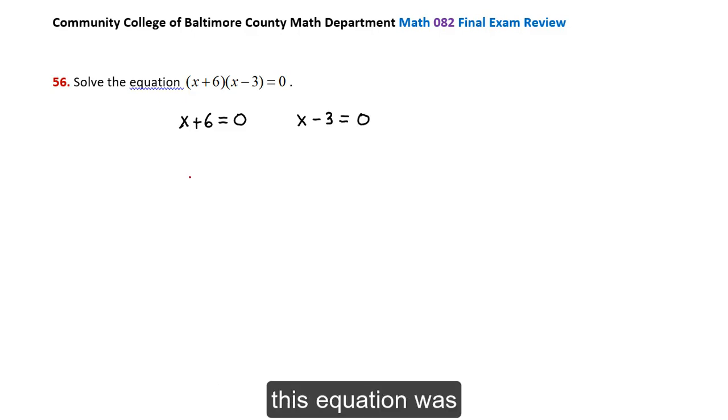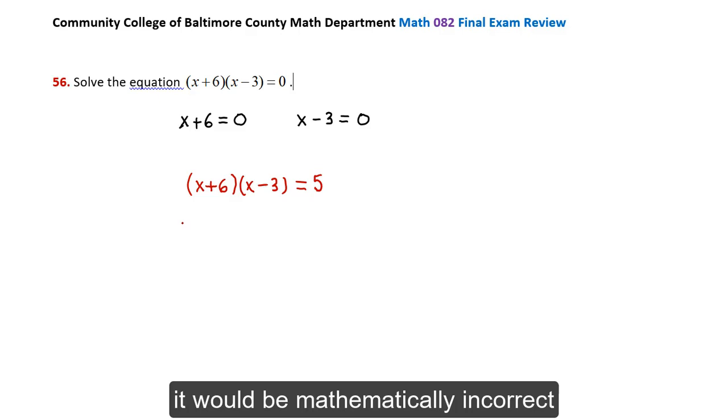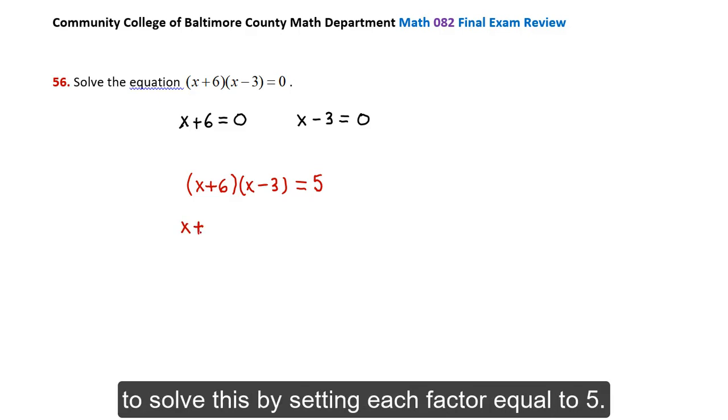If, for example, this equation was x plus 6 times x minus 3 equals 5, it would be mathematically incorrect to solve this by setting each factor equal to 5.